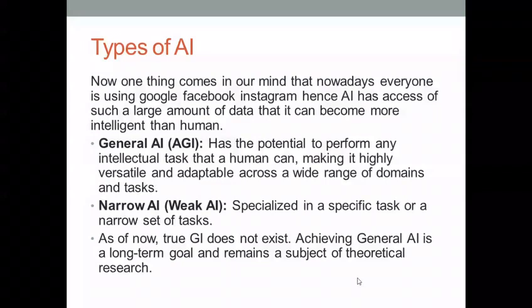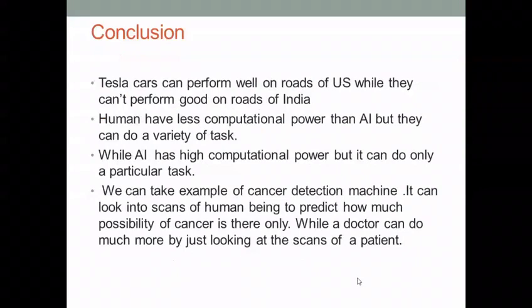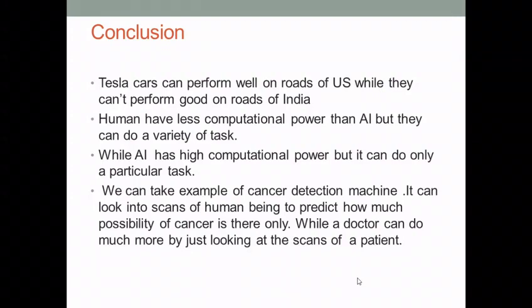As of now, true General AI does not exist. Achieving General AI is a long-term goal and remains a subject of theoretical research. We currently have access to Narrow AI, and it is being used in industries. For example, Tesla cars perform well on the roads of the US but cannot perform well on the roads of India, because they are designed to run on US roads while Indian roads present different challenges.